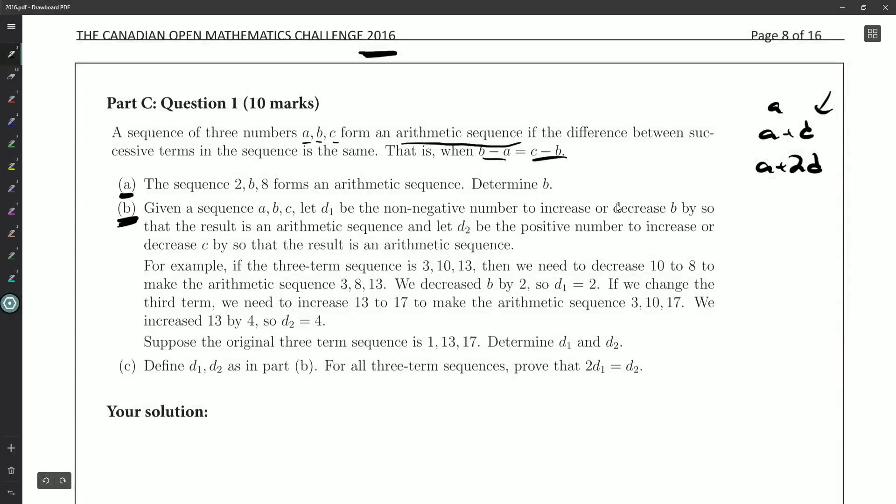Part B. Given a sequence A, B, C, let D1 be the non-negative number to increase or decrease B by so that the result is an arithmetic sequence. Let D2 be the positive number to increase or decrease C by so that the result is an arithmetic sequence. For example, the three-term sequence 3, 10, 13, that's not arithmetic. But if we decrease 10 to 8, then we get 3, 8, 13. So D1 is equal to 2. We decreased by 2.